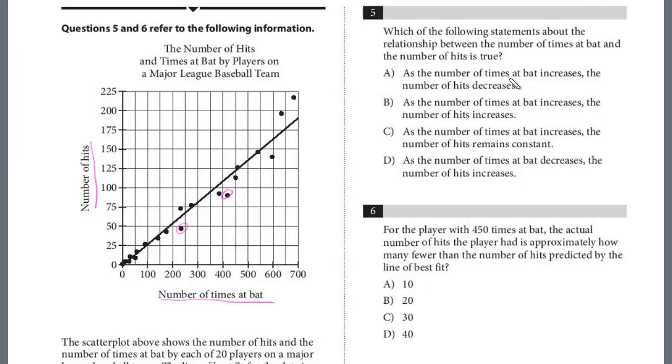A, as the number of times at bat increases, so as we're moving to the right on the x-axis, the number of hits decrease. Definitely not true. We have a positive upward slope. B, as the number of times at bat increases, the number of hits increases.